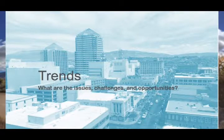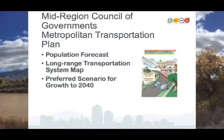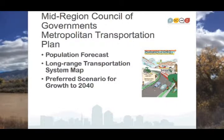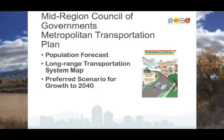ABC to Z is attempting to address many trends, issues, challenges, and opportunities facing the city and the county. The Mid-Region Council of Governments, or MRCOG, is a body made up of the four-county region. MRCOG is responsible for the Metropolitan Transportation Plan — a regional long-range plan done every five years that includes a population forecast, a long-range transportation system map, and for the first time, a preferred scenario for growth to 2040.